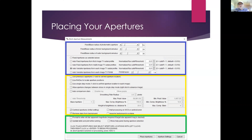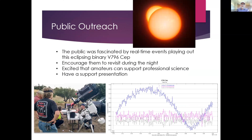One thing to note: when you get to a meridian flip, things will fall apart. If you're doing a long run and want to view real-time photometry on both sides of the meridian, you stop the program, restart it, and select new apertures. Also make sure you check the box to update the measurements table and plot while the program is running. If you do all of that, you can start real-time photometry. The first time I tried this was at the Julian StarFest in 2022.